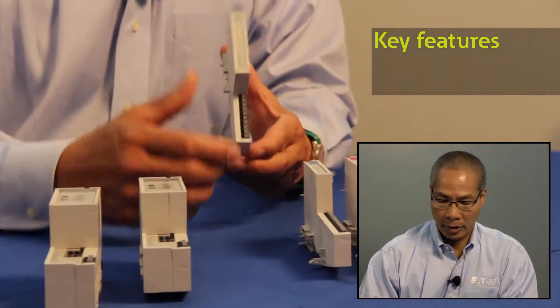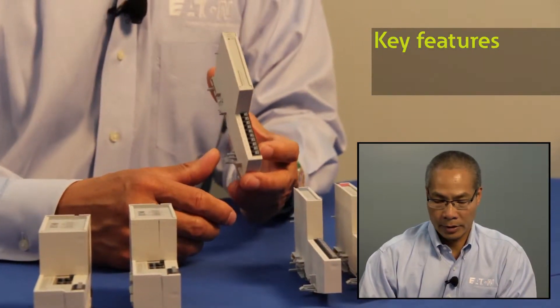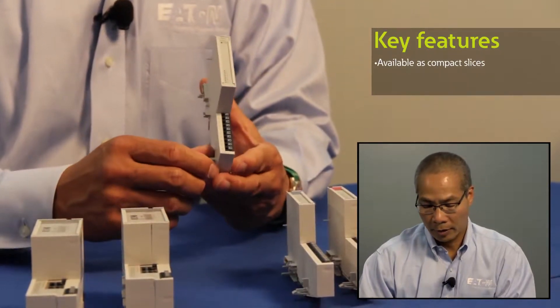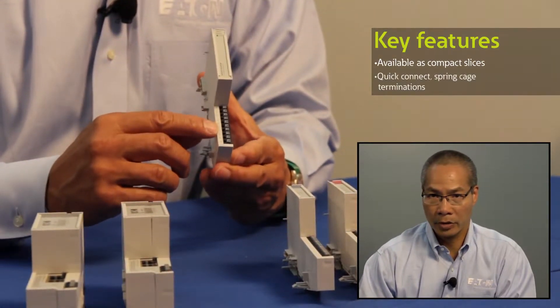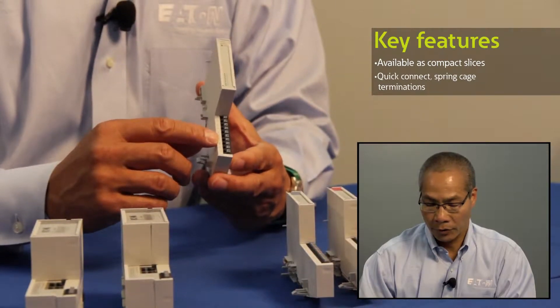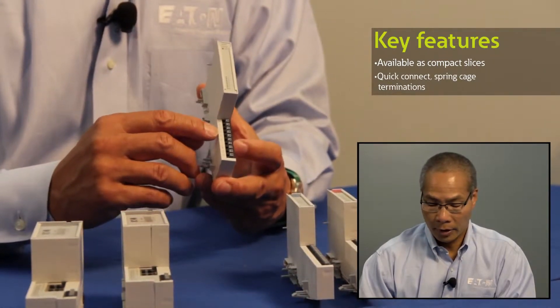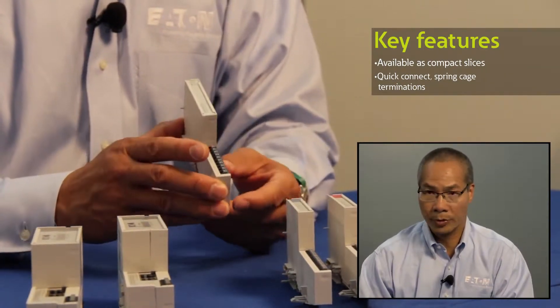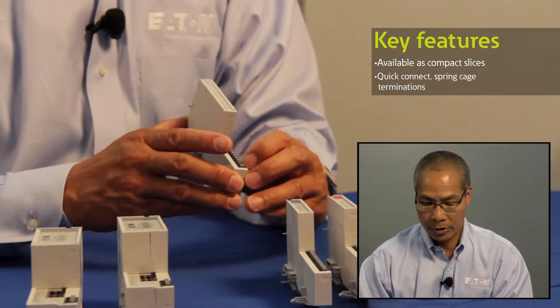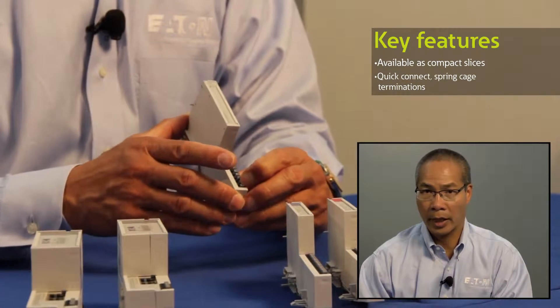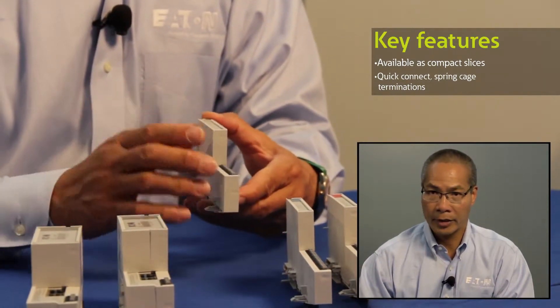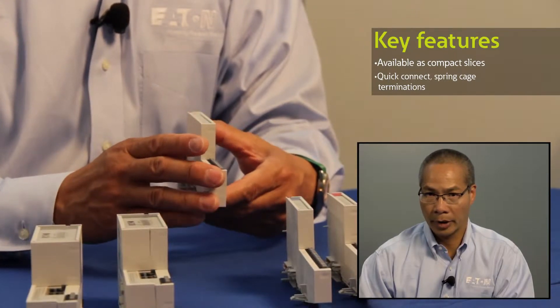All the I.O. modules themselves are available as small compact slices. They feature quick connect terminations with spring cage quick connects. Simply strip your wire, depress this connection and insert the wire, then let go and you'll have a nice tight spring cage termination.